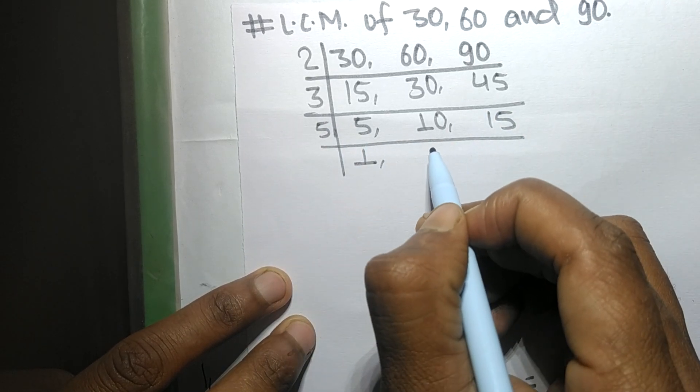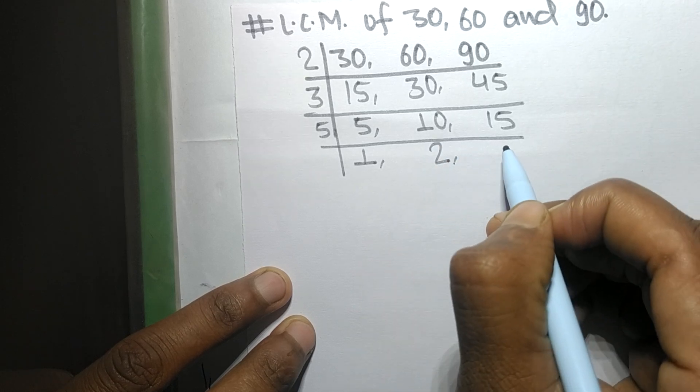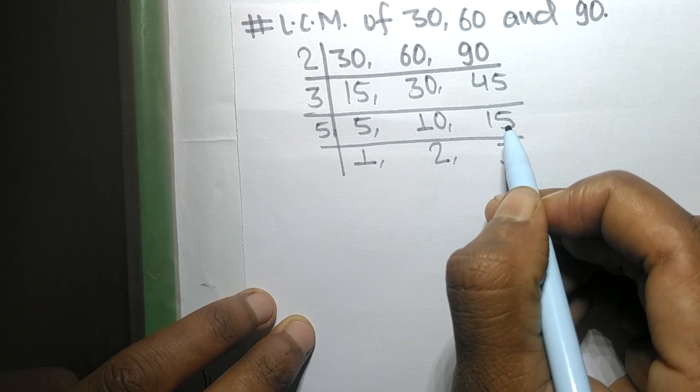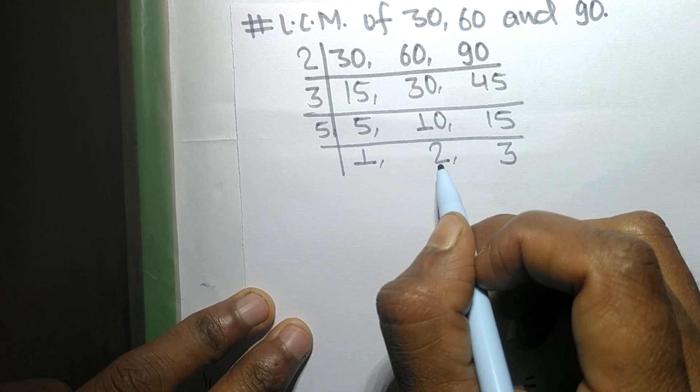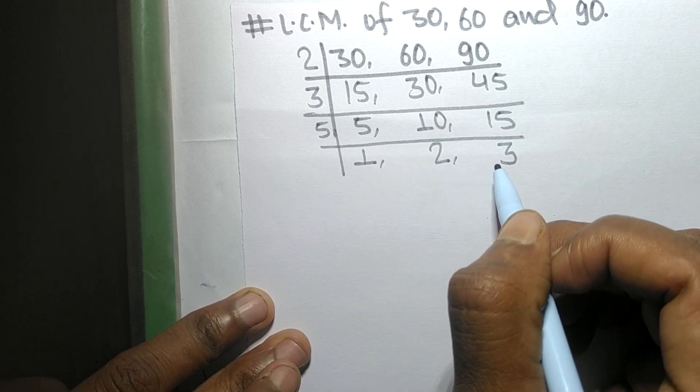5, 5 times 2 means 10, 5 times 3 means 15. These numbers 1, 2, and 3 are not